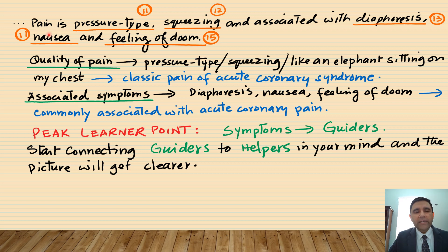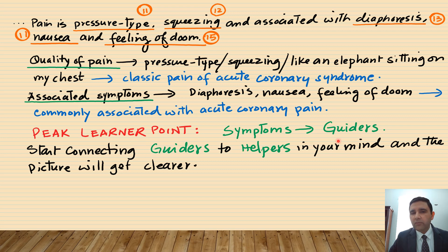There are some more hints — still symptoms, still guiders. Pain is pressure-type squeezing, associated with diaphoresis, nausea, and feeling of doom. The quality of the pain — pressure-type squeezing like an elephant sitting on your chest — is the classic pain of acute coronary syndrome. Associated symptoms of diaphoresis, nausea, and feeling of doom are commonly associated with acute coronary pain. The peak learner point here is: symptoms are one component of guiders. At this point, you should start connecting the guiders to helpers in your mind, and the picture will continue to get clearer.